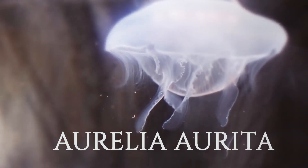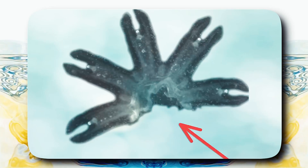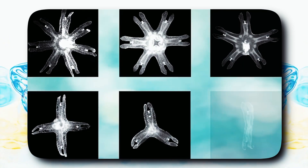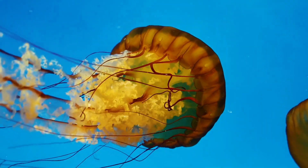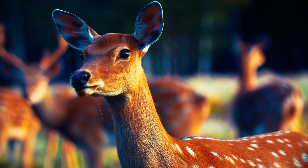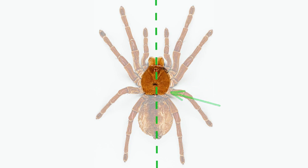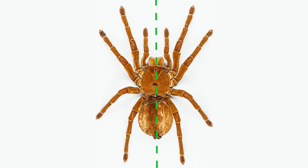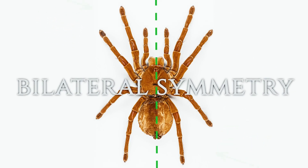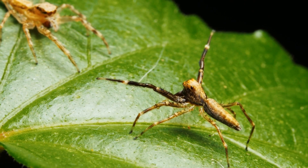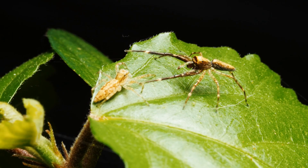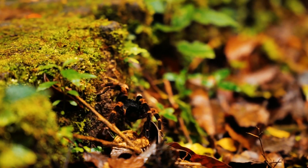Look at the jellyfish Aurelia aurita. Its larvae can swim even when it loses limbs — it simply redistributes the remaining ones and regains its symmetry. As organisms ascend the evolutionary ladder, the need for increased mobility, efficient hunting, and evasion of predators becomes crucial. The front half of the body begins to differentiate from the back half, with sensory organs and mouth located at the front. Bilateral symmetry — the symmetry of the left and right halves of the body — provides efficient forward movement and is very advantageous for organisms seeking to navigate their environment.